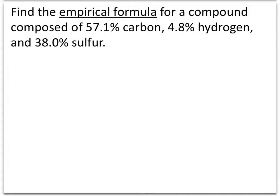This next question asks us to find the empirical formula for a compound composed of 57.1% carbon, 4.8% hydrogen, and 38.0% sulfur. It's almost like working backwards from percent composition.